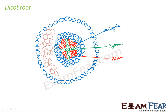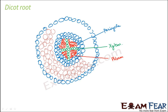Everything else remains the same between a dicot root and a monocot root except for the arrangement of the xylem and phloem. The vascular bundles differ in monocot and dicot root; otherwise the structure is almost the same. Here also you have the central region which is the pith, made up of parenchyma cells.